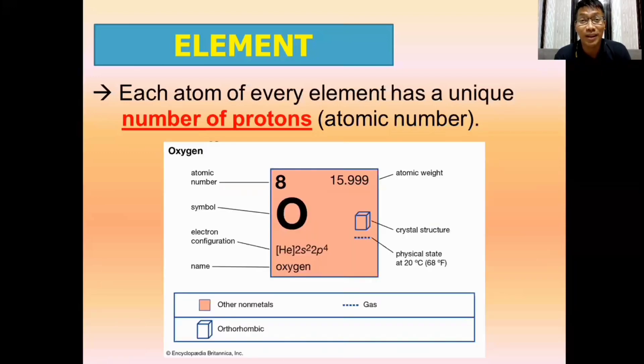We can see the atomic number in the periodic table of elements. For example, we have oxygen. Oxygen's atomic number is eight. It only means that oxygen has how many protons? That's right. It has eight protons. This means all atoms of the element oxygen have eight protons. Therefore, remember, each element has a unique number of protons or atomic number.